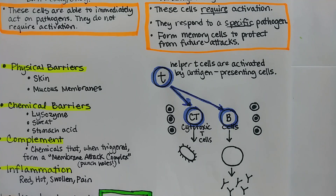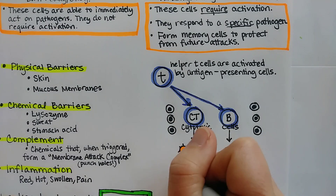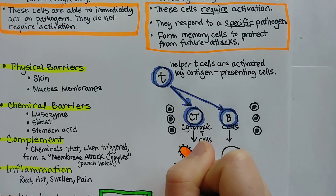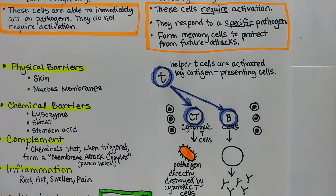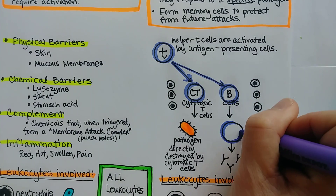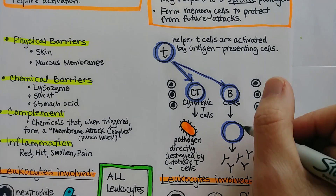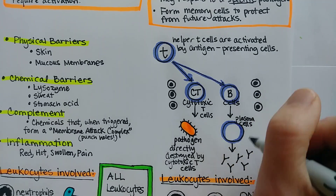Cytotoxic T cells are able to directly attack and destroy pathogens. B cells, when activated, get very large because they become antibody-making machines. At that point we call them plasma cells, because they are filled with so much cytoplasm as they manufacture all these proteins.